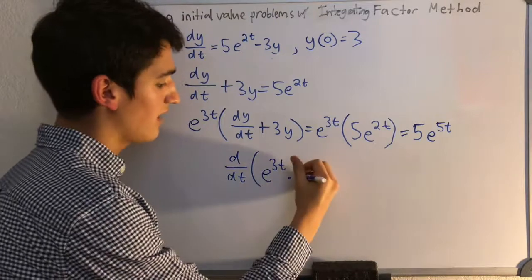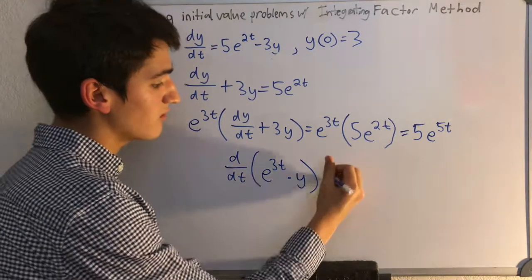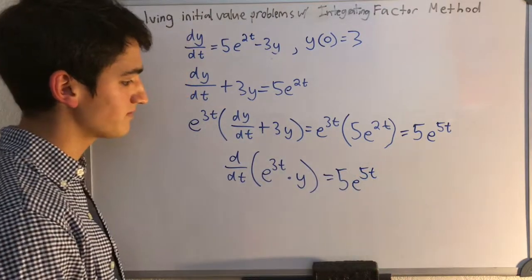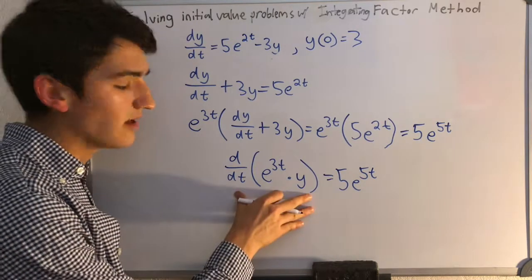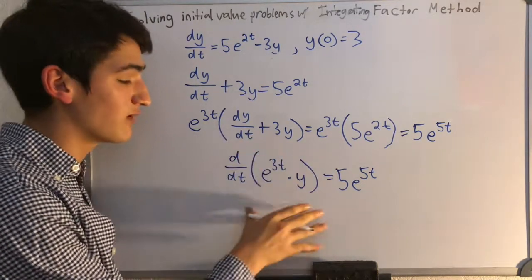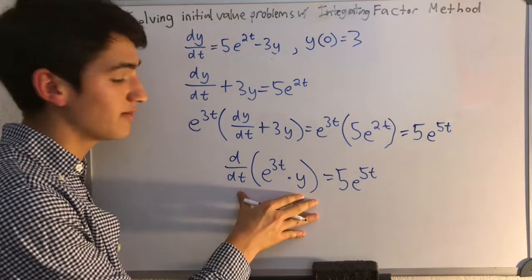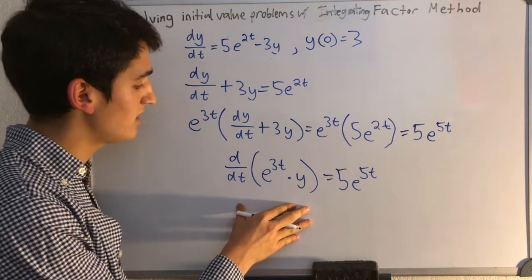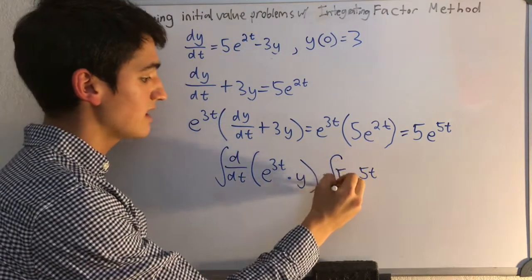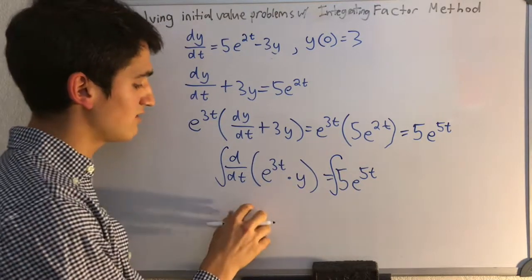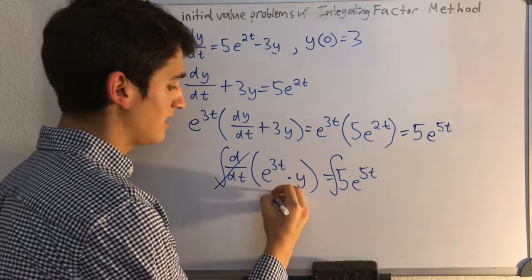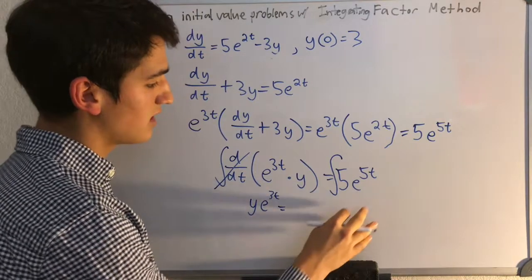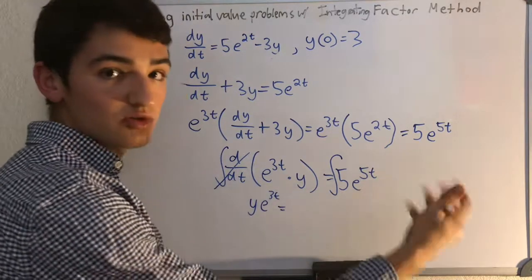So d/dt times the integrating factor, which is simply e to the 3t, times y equals the right side, which is 5e to the 5t. If we worked this out, we could get it back to the previous equation — we're not changing the equation at all, just simply rewriting it as the derivative. Now we're going to simplify this down by integrating both sides. The left side simplifies nicely — these cancel — so we get e to the 3t times y equals the integral of 5e to the 5t.